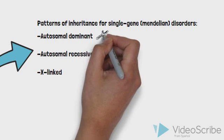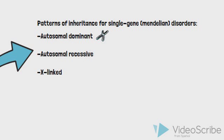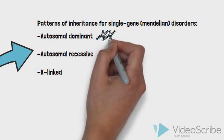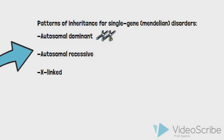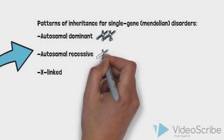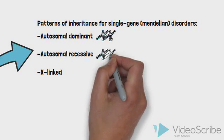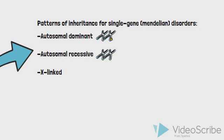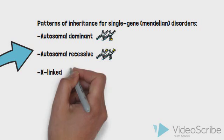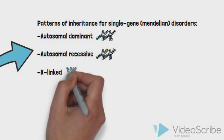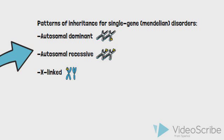Autosomal dominant conditions arise when a single pathogenic allele on one copy of the 22 autosomes is required for phenotypic or observable disease expression. Autosomal recessive conditions require two copies of the pathogenic allele — one from each parent — to be present for disease features to be present. X-linked inheritance occurs when pathogenic alleles are found on the X chromosome. Individuals with a single copy of a pathogenic allele are referred to as heterozygotes, whereas those with two copies of a mutant allele are homozygotes.